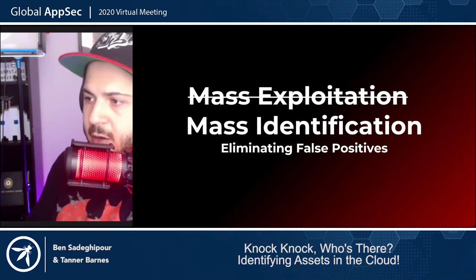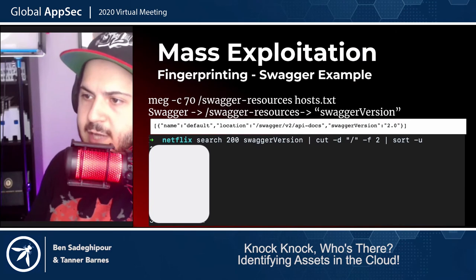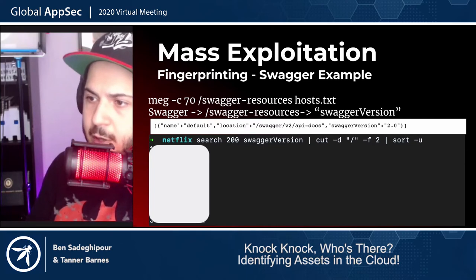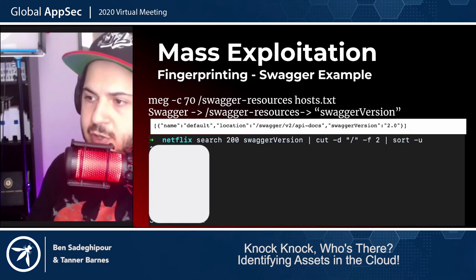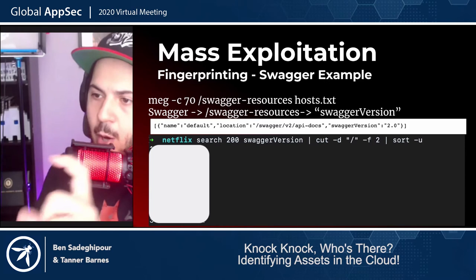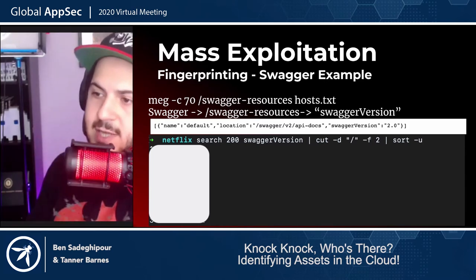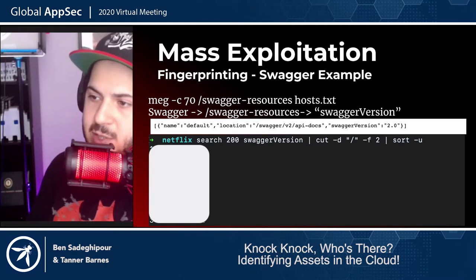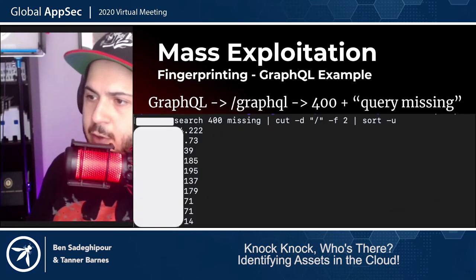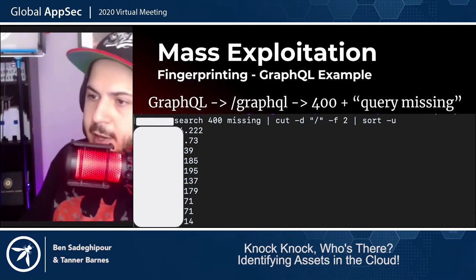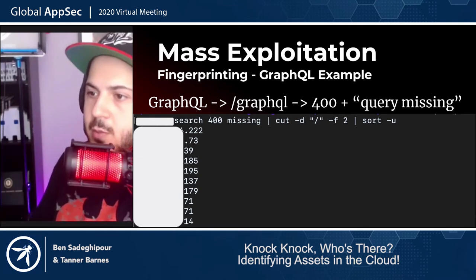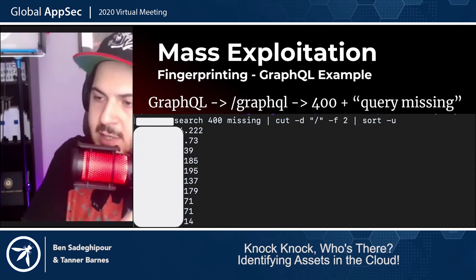To eliminate false positives: run Meg concurrently 70 times looking for Swagger resources across all hosts in hosts.txt. We're looking for the keyword 'swaggerVersion' and want it to come back as 200. All the IPs under that result came back with the keyword swaggerVersion at slash swagger-resources. Same thing for GraphQL — search for 400 status code and the keyword 'missing', cut it up and give just the IP addresses. Every single one of those had GraphQL on them and gave us leads or potential vulnerabilities.